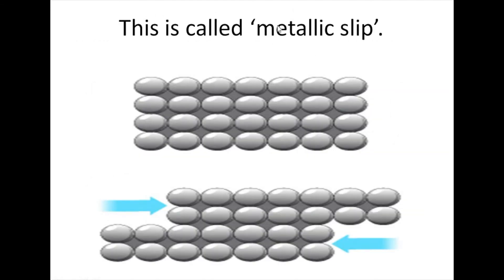This is called metallic slip. If you're asked what metallic slip is, it's where the positive metal ions move over each other — they slide over each other when a force is applied.